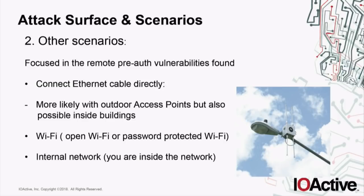For the other scenarios — outdoor or indoor access points — again, if the attacker has physical access, just connect the Ethernet cable. This is more likely with outdoor access points but also possible indoors if the attacker is inside the building. Through Wi-Fi it's also technically possible to exploit some of these issues. And if the attacker is somehow inside the internal network with connectivity to these devices, he could try to exploit the issues.